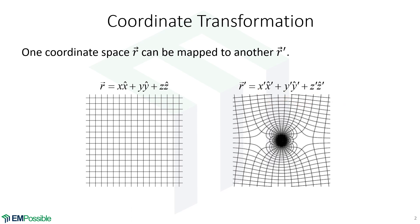Implied behind all this is that somehow we have an equation to calculate X prime given X, Y, Z; that we can calculate Y prime given X, Y, Z; and that we can calculate Z prime given X, Y, and Z.